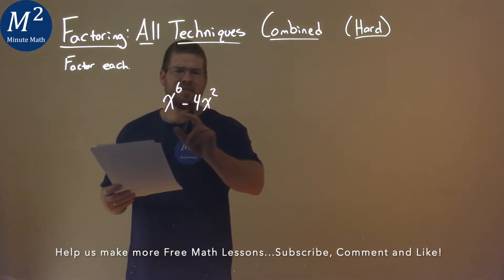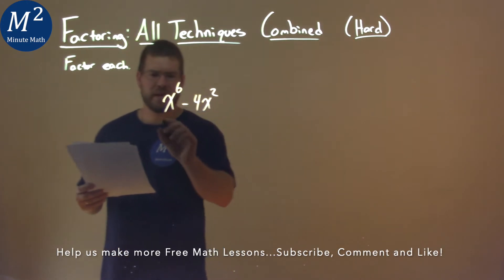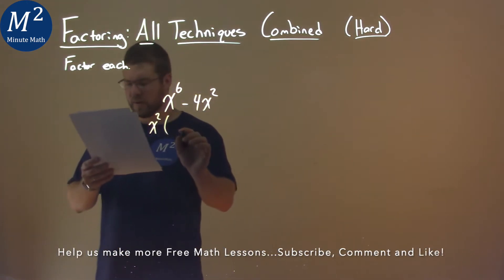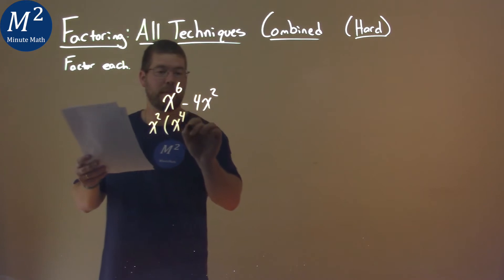Well, first thing I notice is there's an x squared here. Let's pull that out. x squared, and we're left with an x to the fourth minus 4.